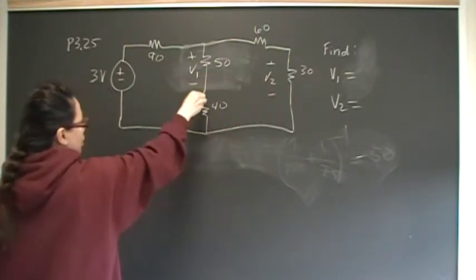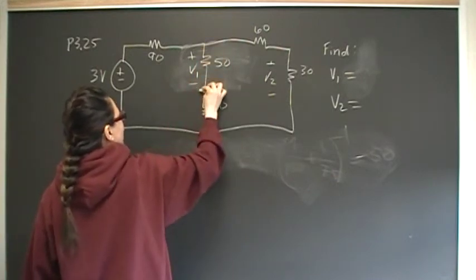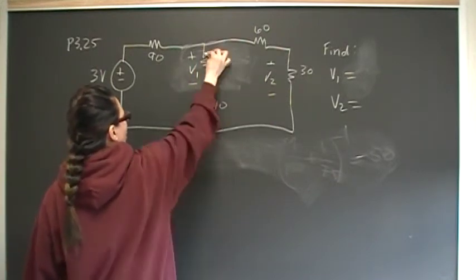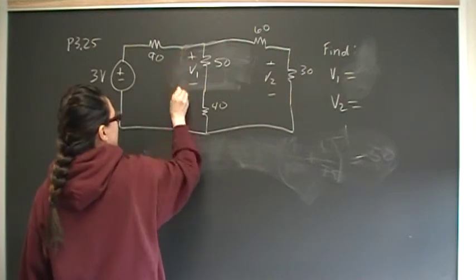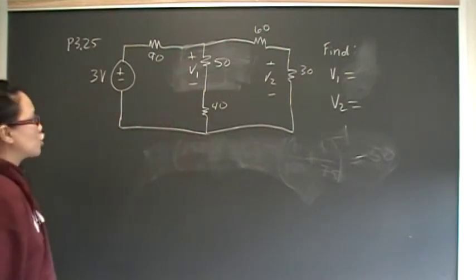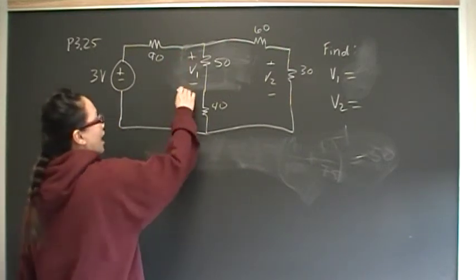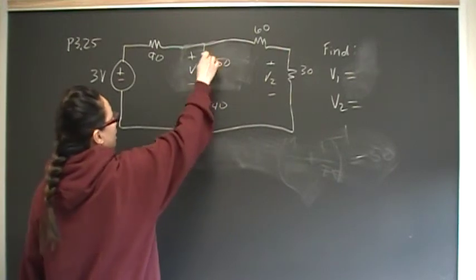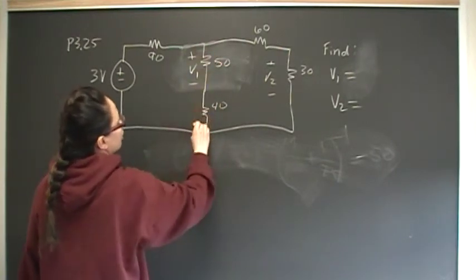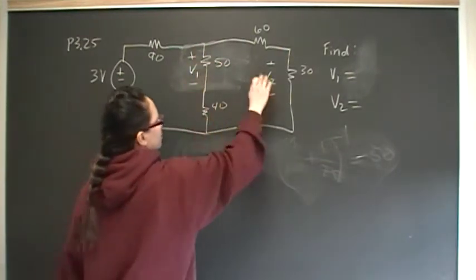So I know that the voltage drop across V1 will be the voltage drop. We're going to use voltage division again, right, because it is going to be proportionate to this total branch. So this is going to be some voltage drop, and we'll use voltage division to find the voltage drop across this as a proportion of this whole leg. And the same thing here.